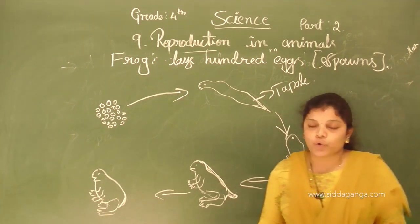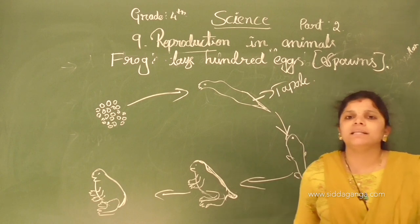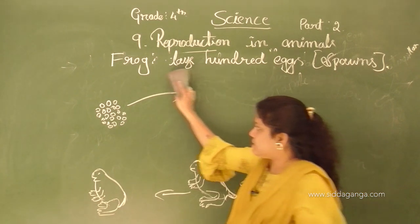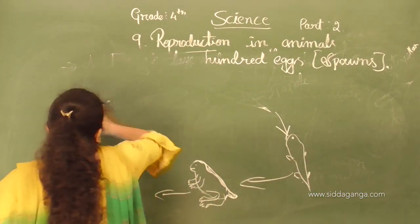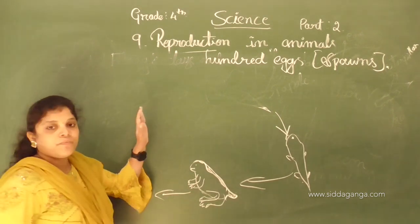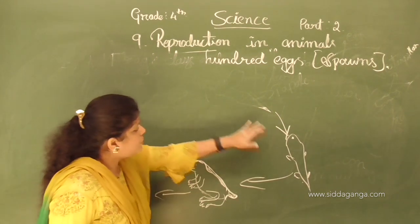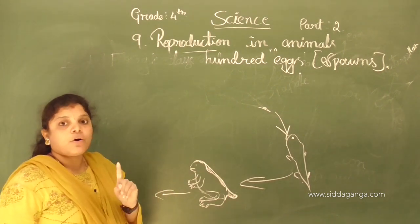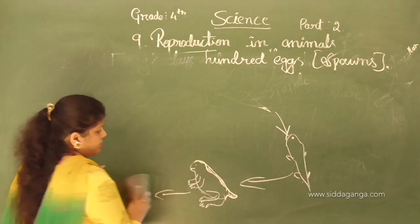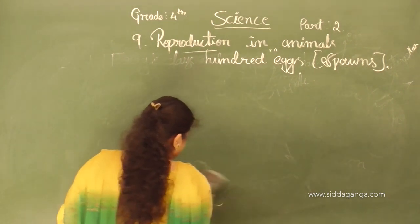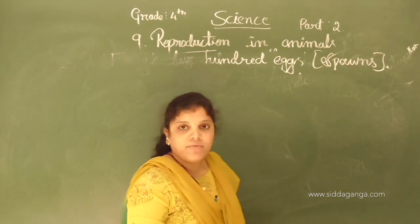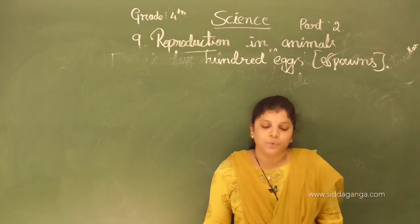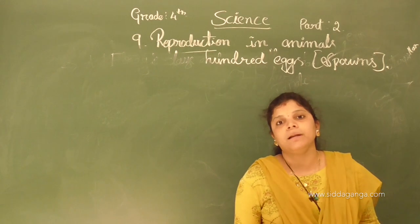Next is about cockroach. Cockroach and grasshopper have only three stages in their life cycle. Frog has five stages, but cockroaches have only three stages.